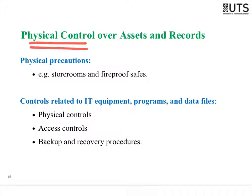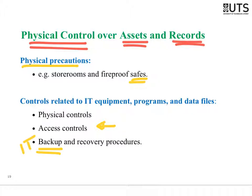The fourth category is physical controls — controls over access to assets and records. These include safes, locks on warehouses, security guards at retail stores, access controls in the form of passwords or security access cards, and backup procedures for IT systems. Backup procedures are important because if something happens to the business and documents are destroyed, you have a backup of the information.